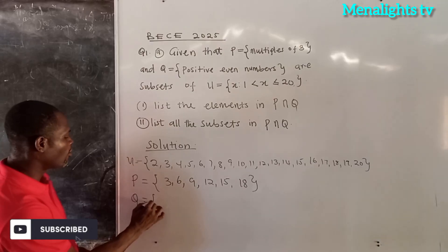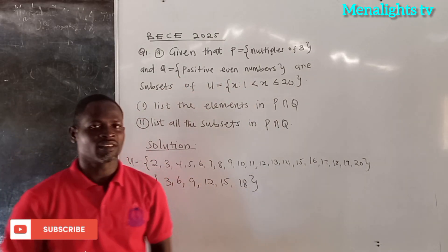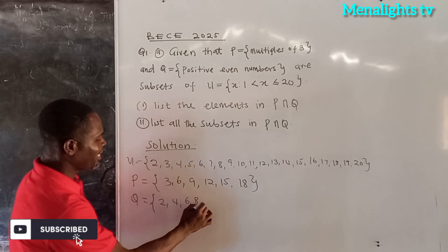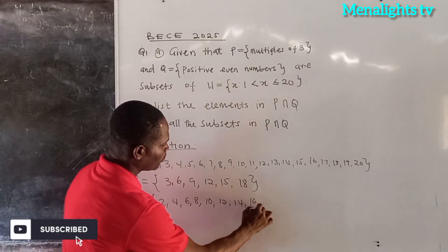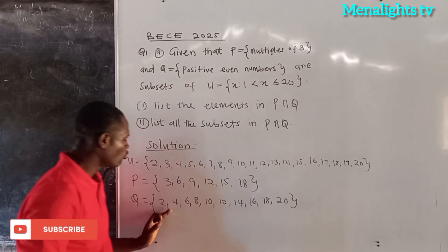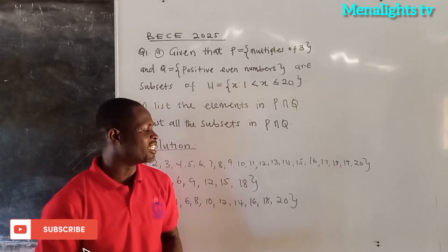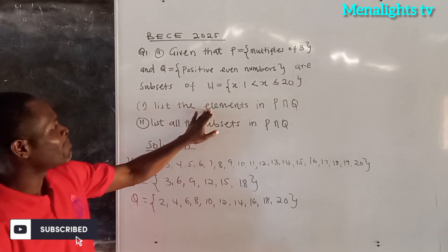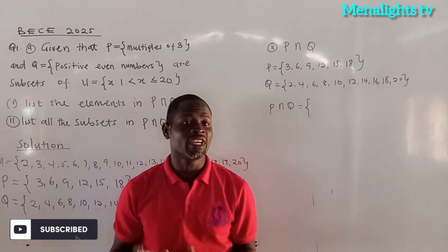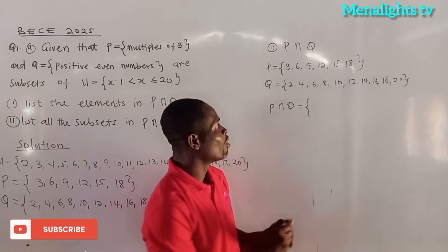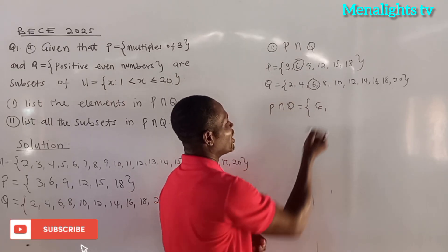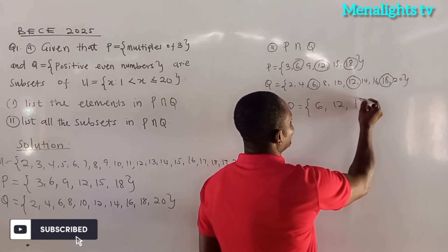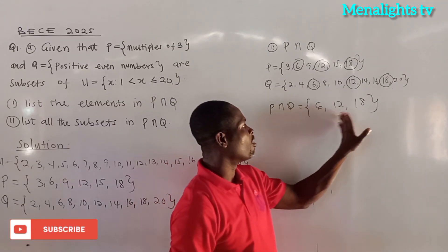Then we come to Q — the members of Q are positive even numbers. The even numbers in the mother set start from 2, 4, 6, 8, 10, 12, 14, 16, 18, and 20. Now we list the elements of P intersection Q. Intersection means elements common to both P and Q. We have 6 in both, 12 in both, and 18 in both. So the intersection of P and Q is {6, 12, 18}.